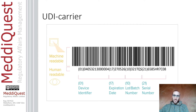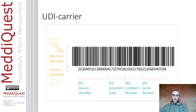The UDI-PI part is dynamic as it depends on the production characteristics of the product. Each number in brackets on the UDI-PI part provides specific information: 10 is for the lot number, 11 for the production date, 17 defines the expiration date, and 21 is the serial number. All this information is dynamic as it changes with each new batch or expiration date.